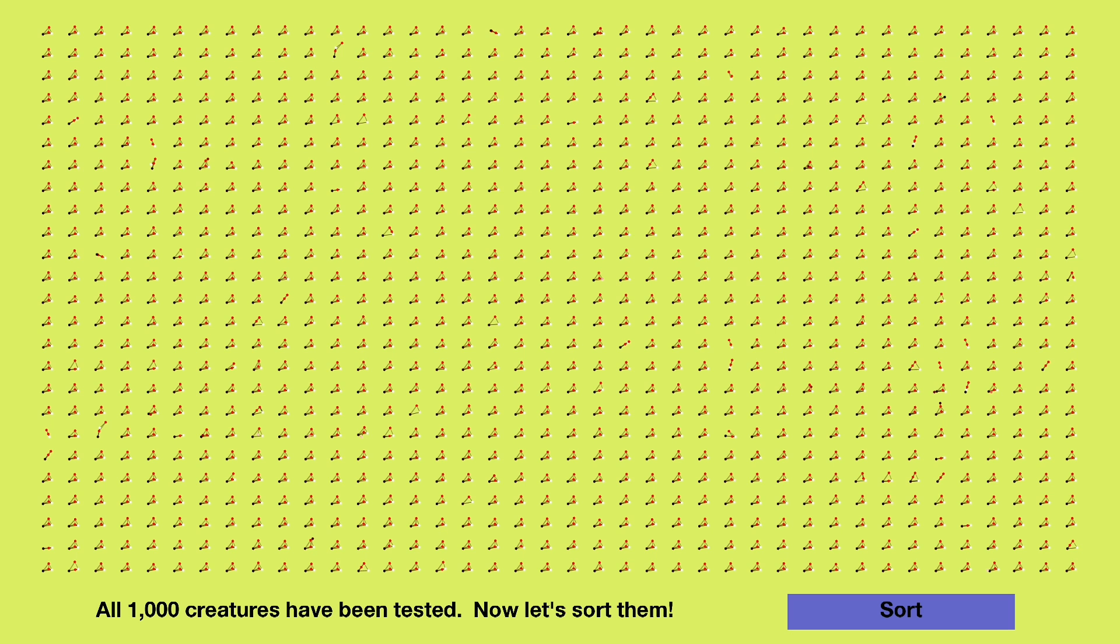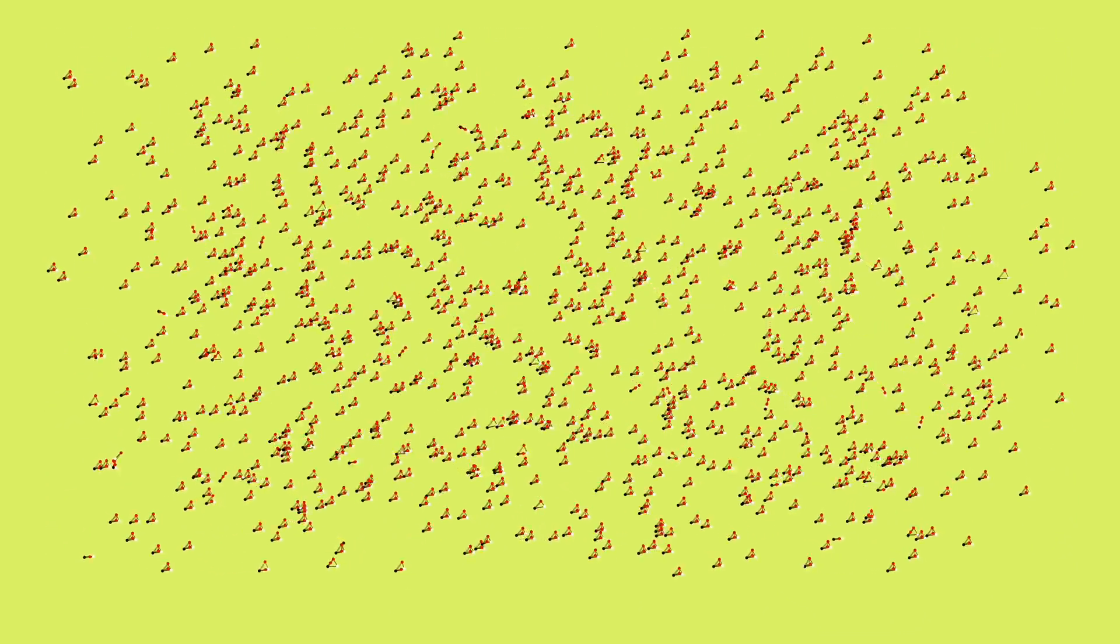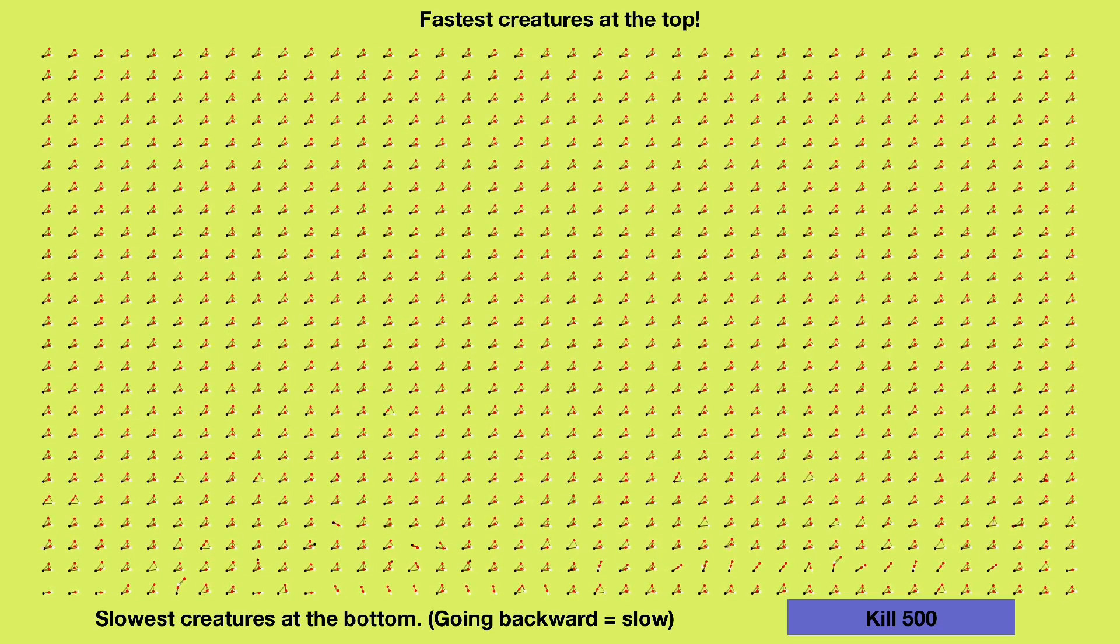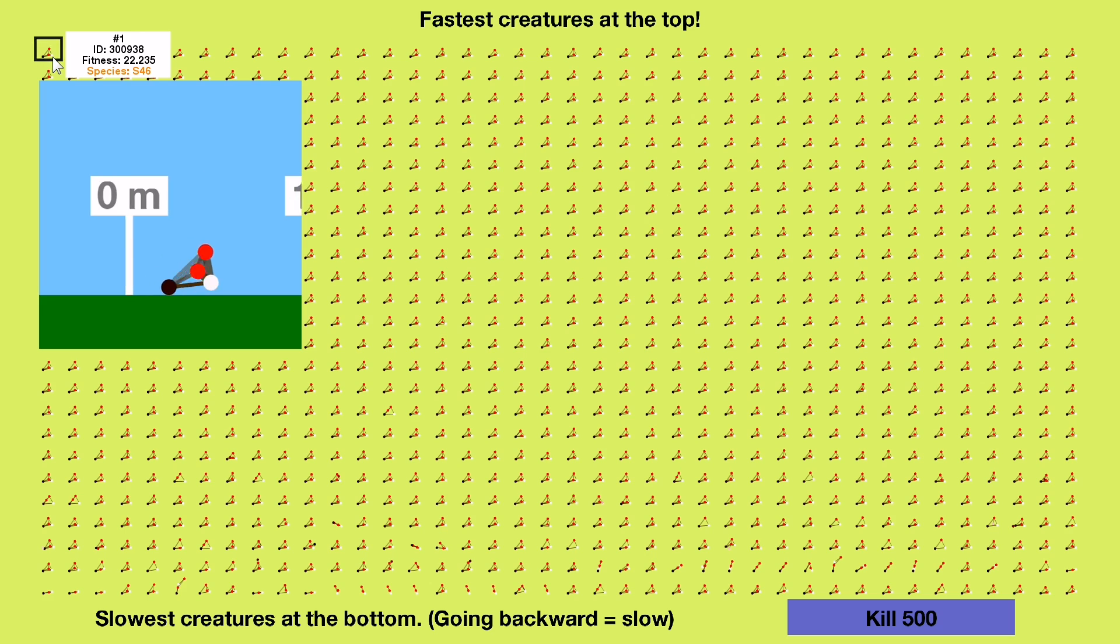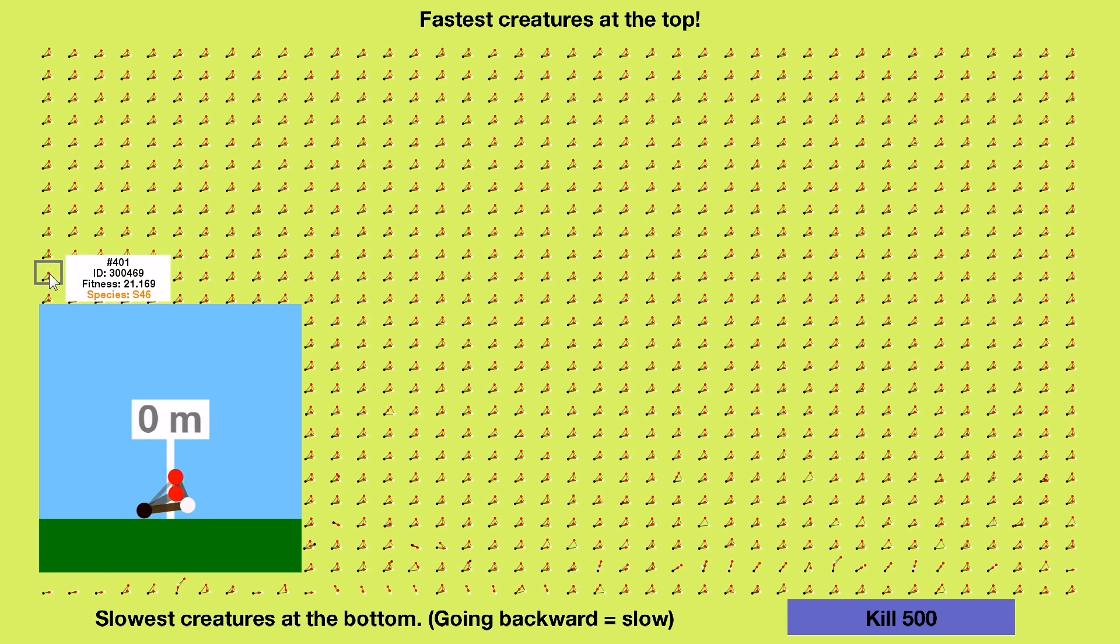Oh my gosh, it's so homogenous it looks like a wallpaper. But when you sort them, you can see all of the fatal mutations lying around at the bottom. Creatures missing muscles, nodes, or facing the wrong direction. You get the picture.